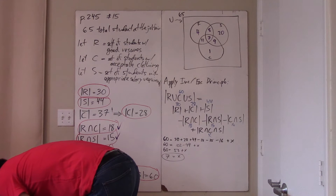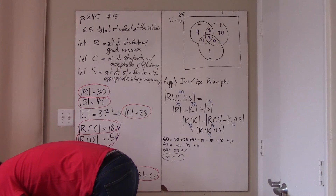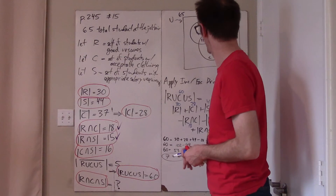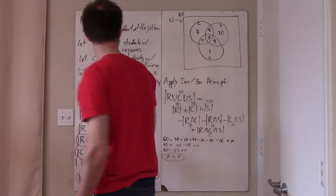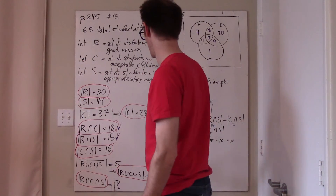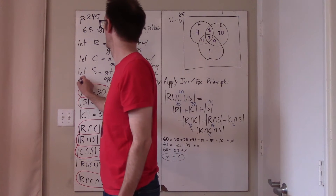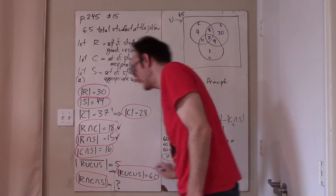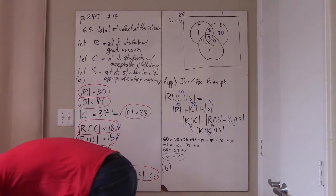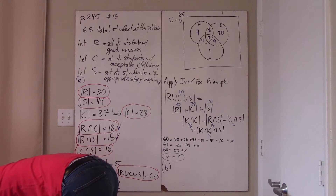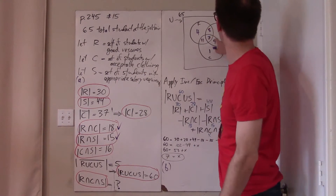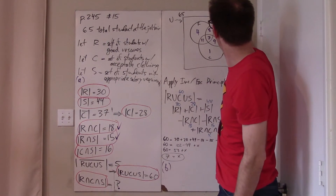Final question: how many students were offered interviews? Answer: seven. How many students passed the resume screen but failed the other two? This was part a of the problem — finding the number of people who were offered interviews. Part b asked how many students passed the resume screen but failed the other two, meaning they weren't in s and weren't in c, but were in r.